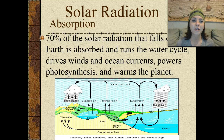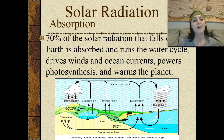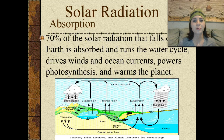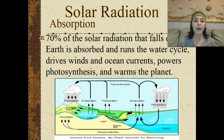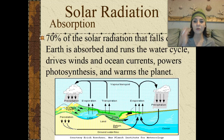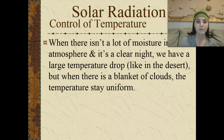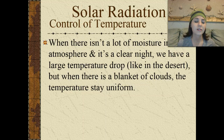As far as solar radiation absorption goes, 70 percent of solar radiation that falls on earth is absorbed, and it runs the water cycle, drives winds and ocean currents, powers photosynthesis, and it also warms our planet. It can also control temperature.